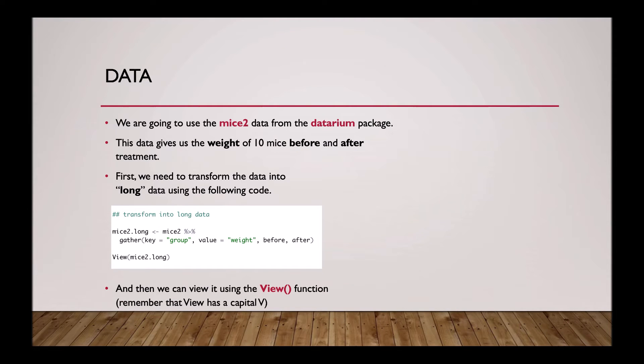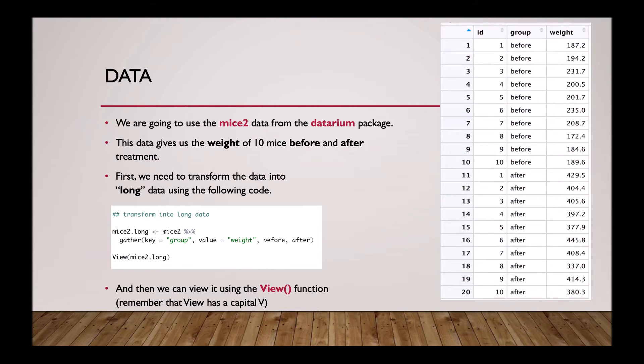For this tutorial, we are going to use the mice2data from the datarean package that we have just loaded. This data set is the weight of 10 mice before and after treatment. The first thing we need to do is transform this into long data, and then we can view it using the view function. You can do this by using the following code, and remember that view has a capital V.